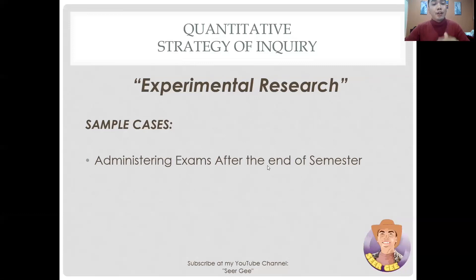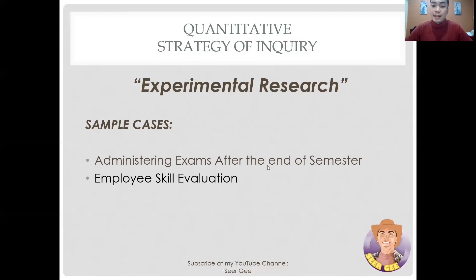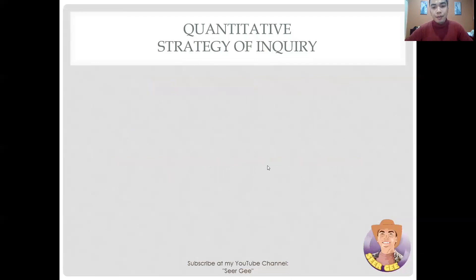Another example is employee skill evaluation. Before employing a job seeker, organizations conduct tests to screen out less qualified candidates from the pool of applicants, determining an employee's skill set at the point of employment. During employment, organizations carry out training to improve employee productivity. Further evaluation is carried out at the end of each training to test the impact on employee skills and test for improvement. Here, the subject is the employee and the treatment is the training.